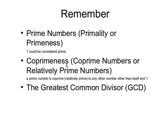A prime number is coprime, or relatively prime, to any other number other than itself and one. To check whether two numbers are coprime or not, their GCD needs to be one — the greatest common divisor of the two numbers is actually one. I have more than one video on this; just look up my YouTube channel to find my videos on prime numbers, coprimeness, and integer arithmetic in general.